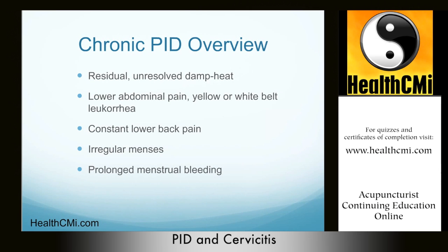Chronic stage PID: look for a wiry or slippery pulse, and the tongue may be purple with a white or yellow coating. The diagnosis is qi and blood stagnation. Indications include lower abdominal pain, yellow or white belt leucorrhea, intermittent or constant lower back pain, irregular menstruation, prolonged menstrual bleeding, lower abdominal palpable masses, and infertility. The treatment principle is to invigorate the blood to remove blood stasis and regulate the qi.